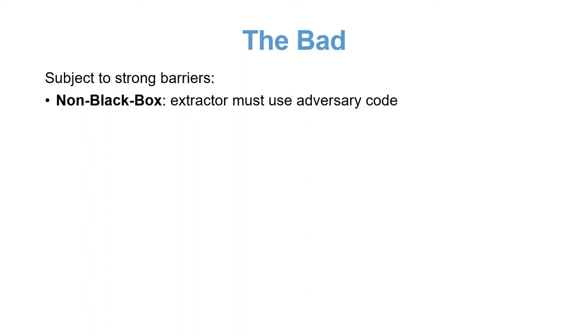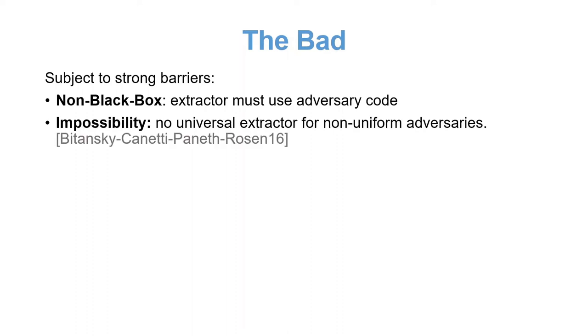The second barrier is that EFs are subject to an impossibility result by BCPR. Bitansky et al. showed that assuming indistinguishability obfuscation, no efficient extractor can work against all polynomial time non-uniform adversaries, even non-black box ones.